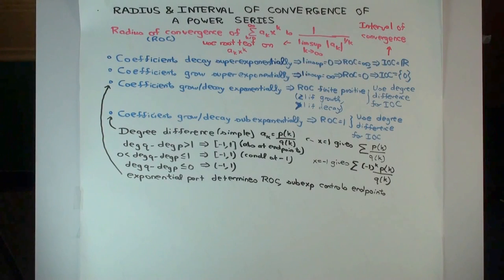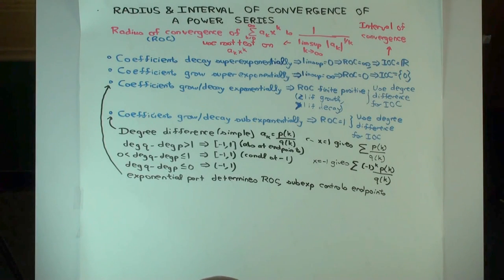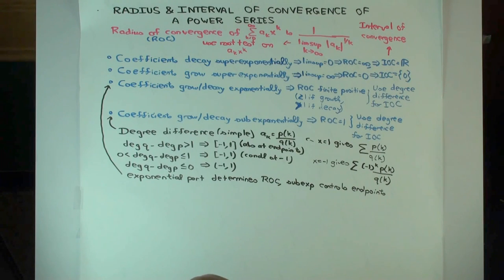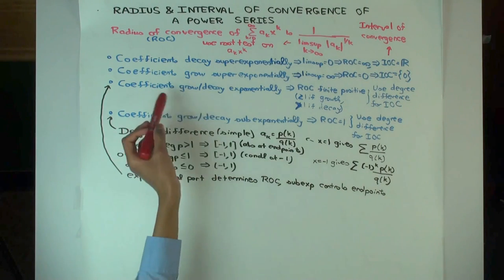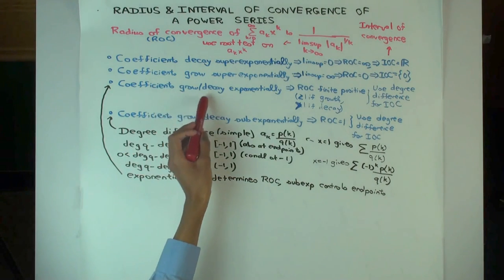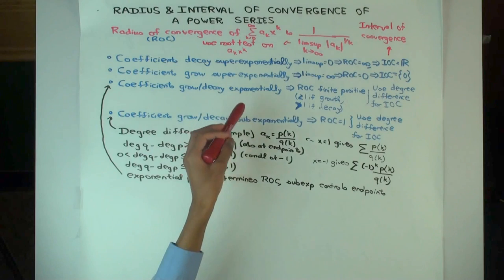This talk is a slight continuation of a previous talk where we figured out how to determine the radius of convergence and interval of convergence of a series where the coefficients grow and decay exponentially.